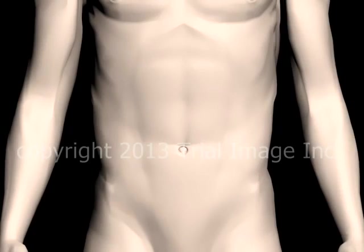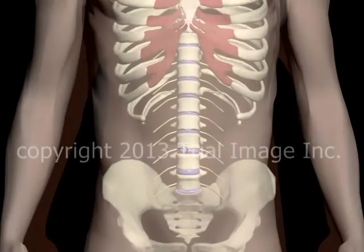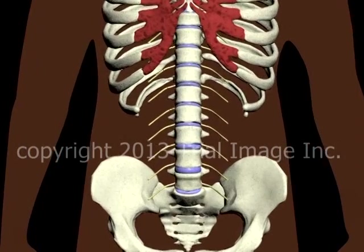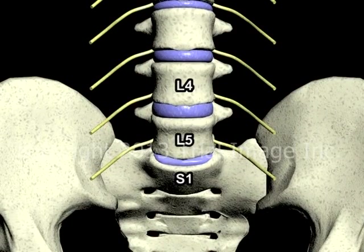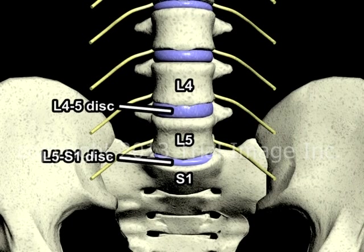This is Dr. Cal Shipley with a review of discectomy and fusion in the lumbar spine. Taking a look first at the anatomy, we see the 4th and 5th lumbar vertebra, or L4 and L5 as they're known for short, and the 1st sacral vertebra, or S1. And then the L4-5 disc sitting between the 4th and 5th lumbar vertebra, and the L5-S1 disc sitting between the 5th lumbar and 1st sacral vertebra.